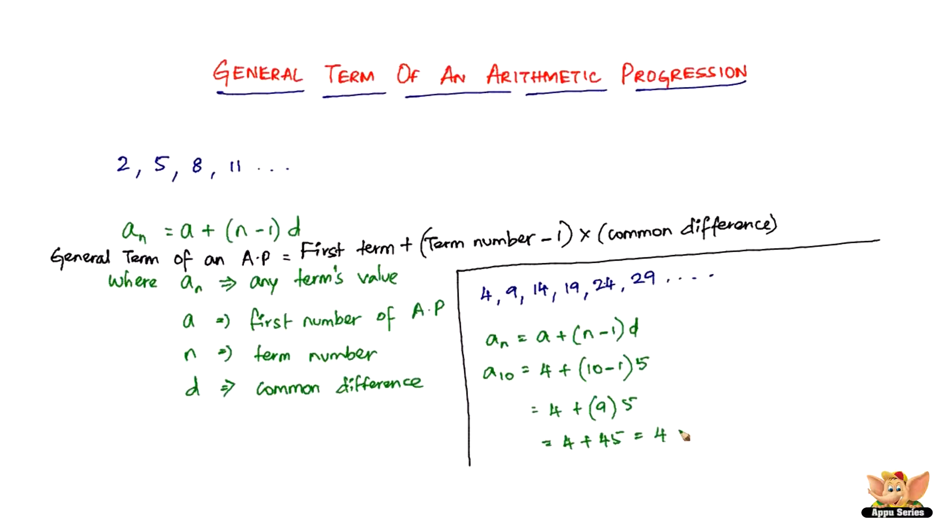So the 10th term of this given arithmetic progression is 49. It is really going to be helpful, say for example, if you want to find the 100th term or the 150th term, and so on—such large numbers. So that's when the general term of an arithmetic progression is going to be put into real use. That's the end of this topic as well as this video. I'll see you in further videos with more problems based on the general term of an arithmetic progression.